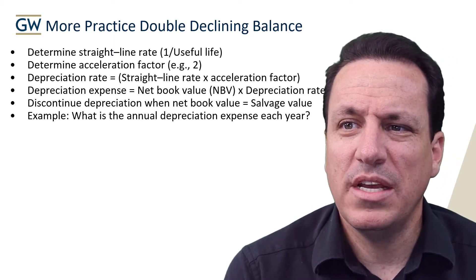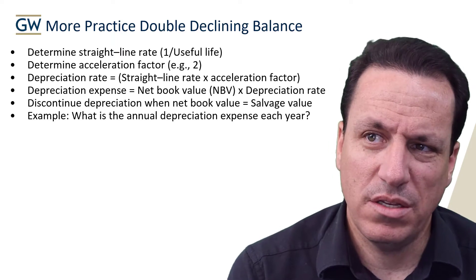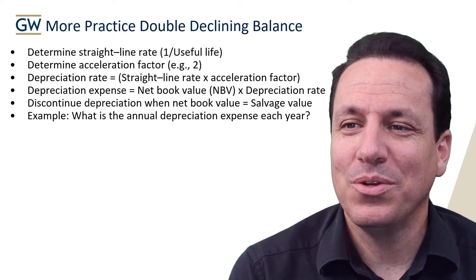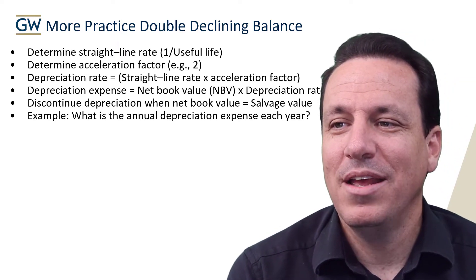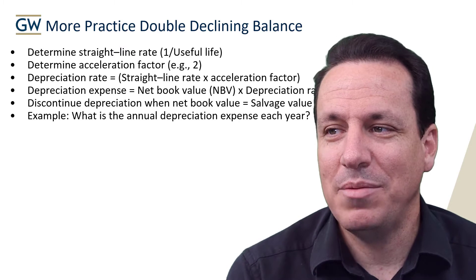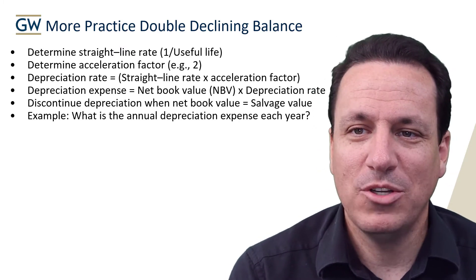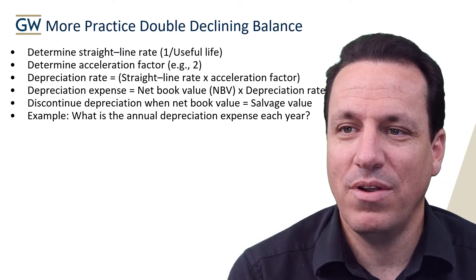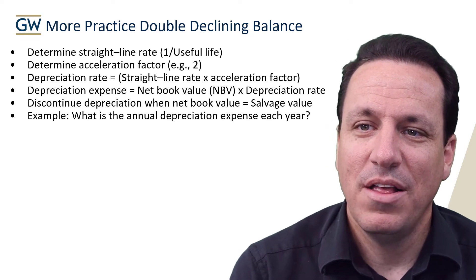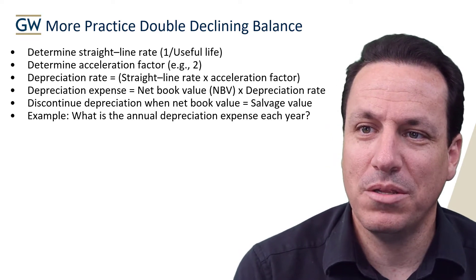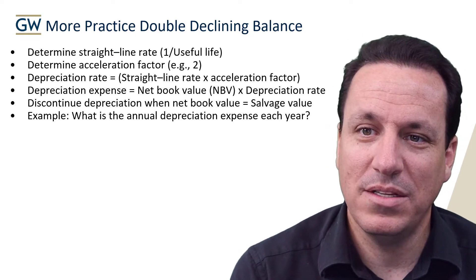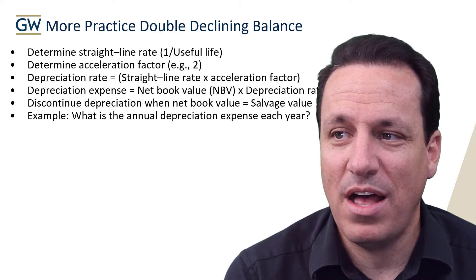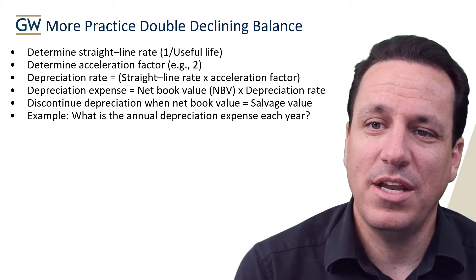We determine the acceleration factor, which in double declining will be two. The depreciation rate equals the straight line rate times the acceleration factor — that's the rate we're going to depreciate on the double declining balance. The depreciation expense is the net book value times the depreciation rate.